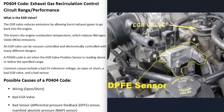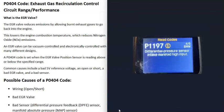The next possible cause is a bad sensor — something like a bad differential pressure sensor or a bad manifold absolute pressure sensor. It will differ depending on what sensors the computer is using on your specific vehicle. Usually if you have a bad sensor, you're going to be getting other codes too. For example, if you're also getting a P1197 code for differential pressure sensor intake manifold high input, that would point to a bad sensor. So if you are getting other codes, be sure to pay attention to those.